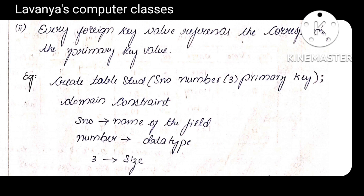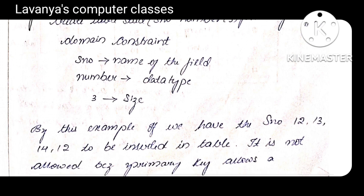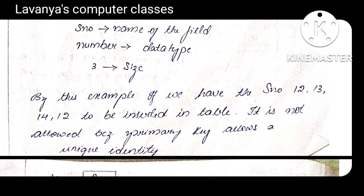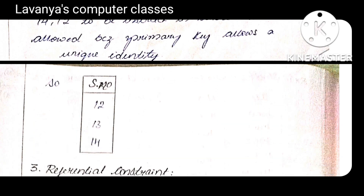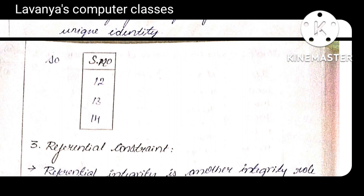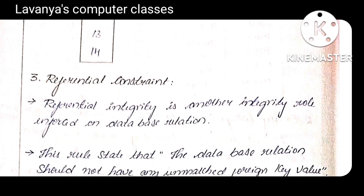Serial number is the field name, NUMBER is the data type, three is the size — these are domain constraints. PRIMARY KEY is the integrity constraint. Whenever we add this key, it is not at all possible to accept duplicate values. In this example, if serial numbers 12, 13, 14 are entered and you try to type 12 again, it is not accepted.